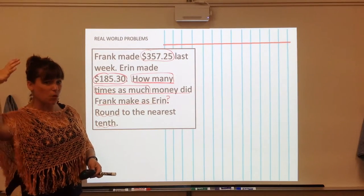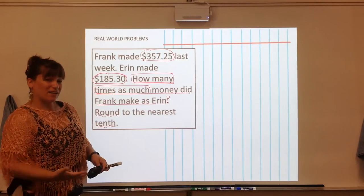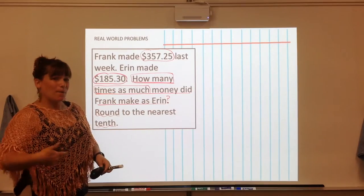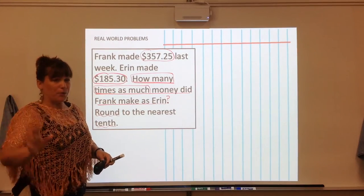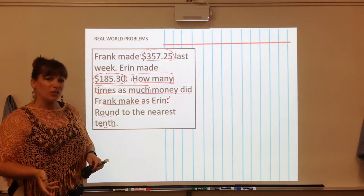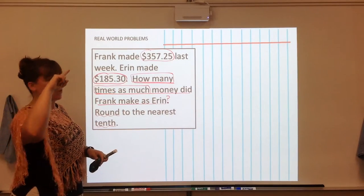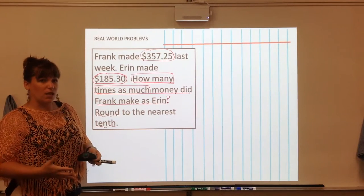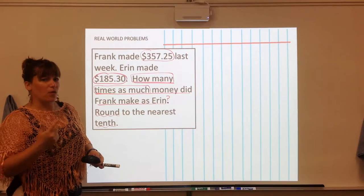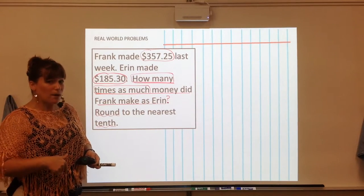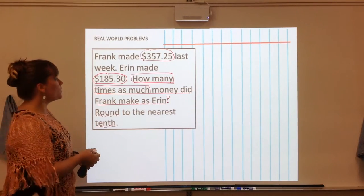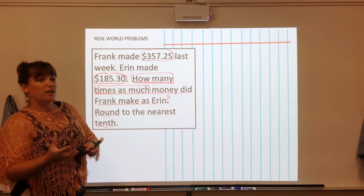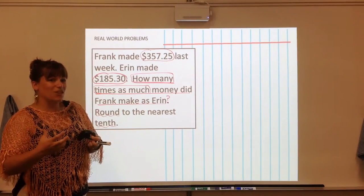When the question is being asked how many times as much, it sounds very wordy but really all it's talking about is that somebody's making more, somebody's making less and that gal in this case Erin who's making less, how many times would she have to reproduce the amount of money that she made in order to get to in this case Frank's amount. So it's really just a different way of saying let's divide these numbers and find out what you would have to multiply Erin's amount by to get Frank's.